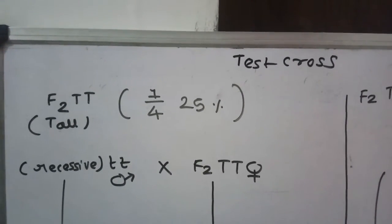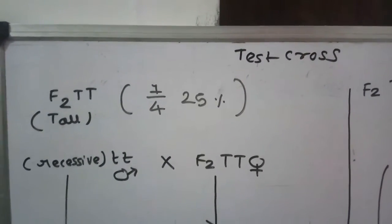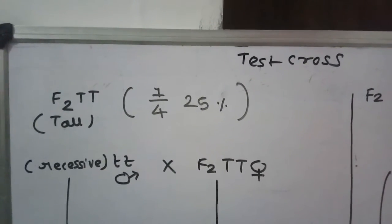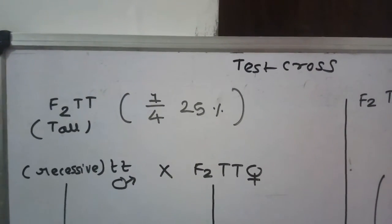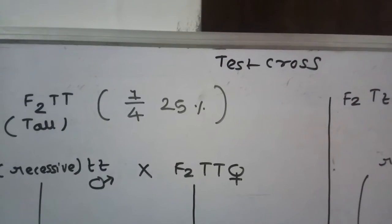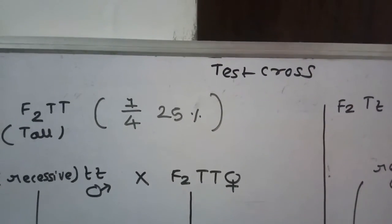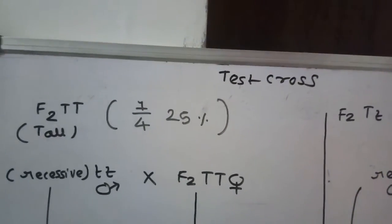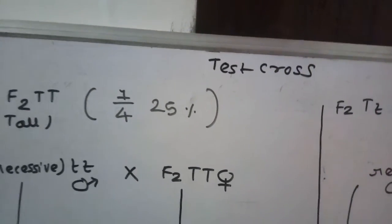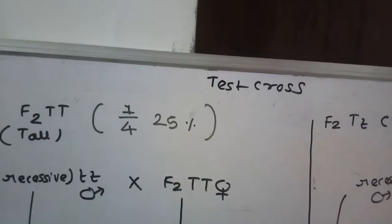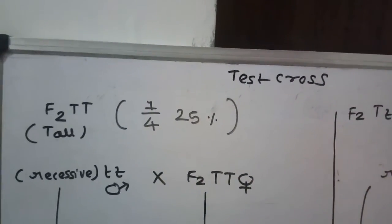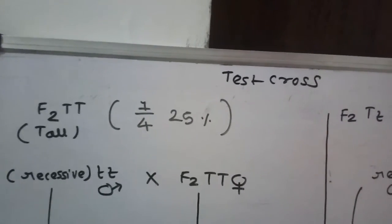Again, recall the results of F2 generation of monohybrid cross. We receive a 3 to 1 phenotypic ratio where 3/4 plants are tall while 1/4 plants are dwarf. When we talk about dwarf plants, there is no doubt that dwarf plants are having genotype small t small t, because dwarf character is only possible if homozygous recessive small t small t genotype is there.